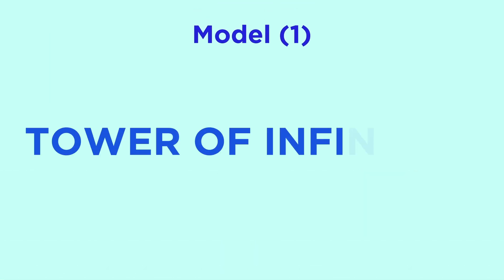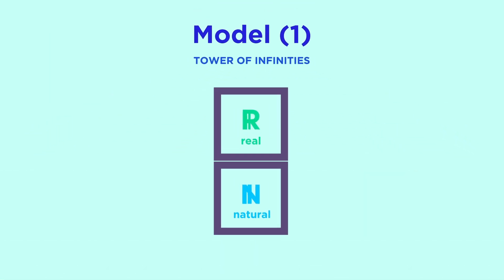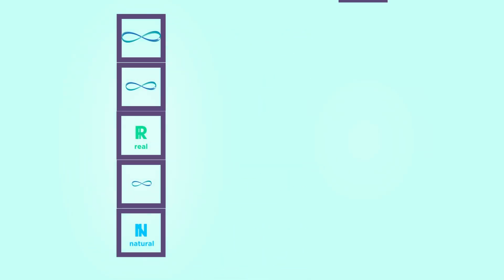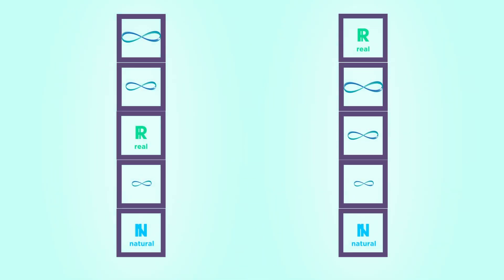In one model of the tower of infinities, the real numbers sit directly above the natural numbers, like this. But in other models, there are many infinities in between, like this or this.